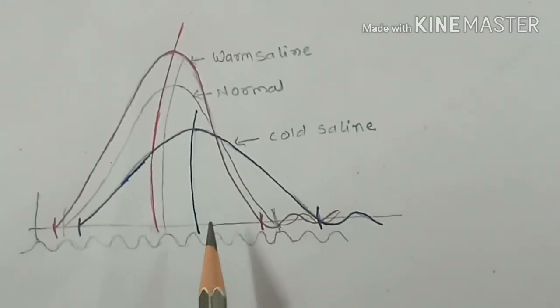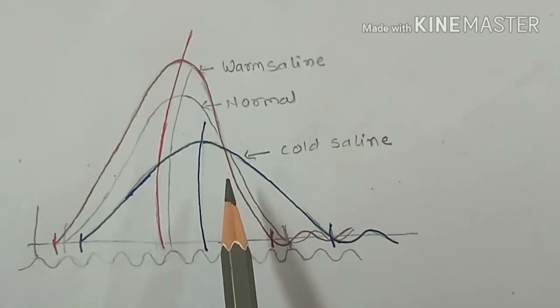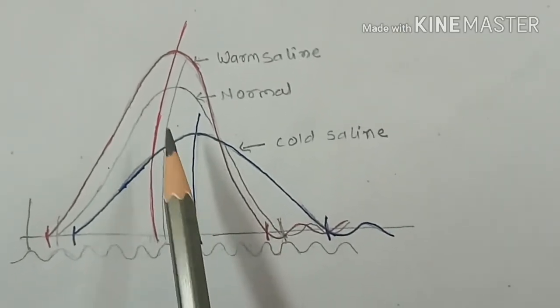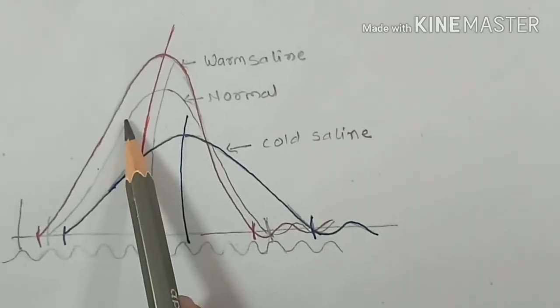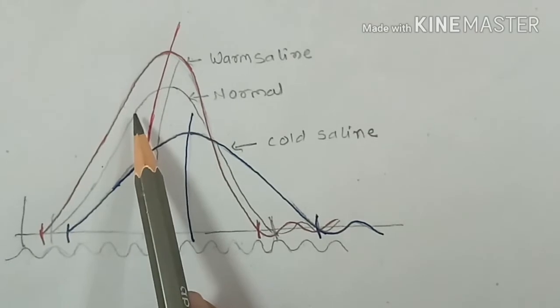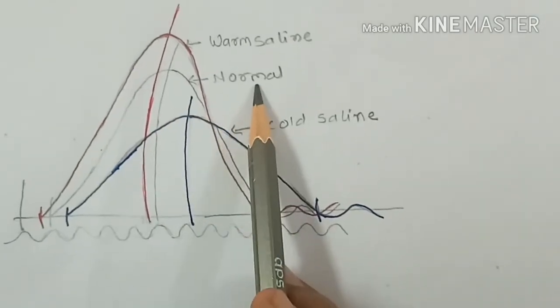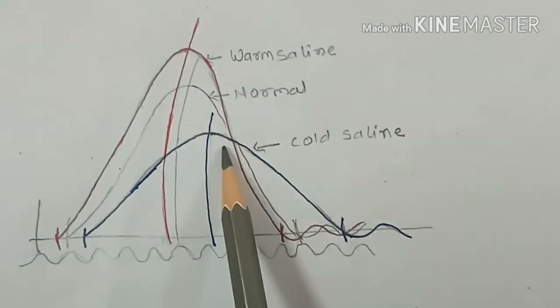Let us observe the effect of temperature on simple muscle curve. First of all, record the simple muscle curve on the revolving drum with ringer solution in the muscle trough at room temperature. This is the recording we get when we are observing the muscle contraction.